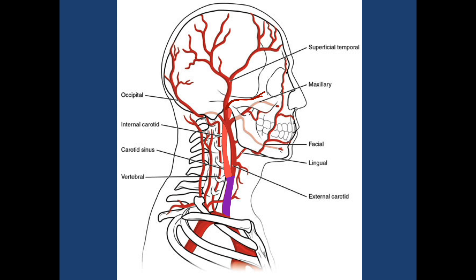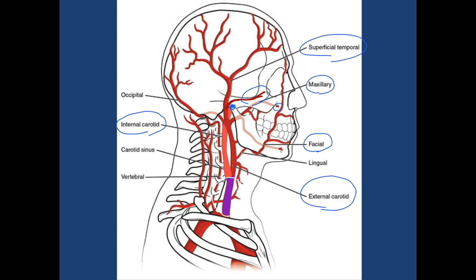For a quick overview: the common carotid splits into the internal carotid, which passes up to the brain, and the external carotid. The external carotid gives rise to the facial artery, the maxillary which comes through to the infraorbital, the transverse zygomatic, and the superficial temporal. A lovely quick overview to orientate yourselves.